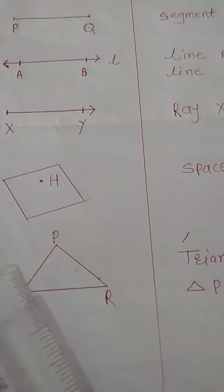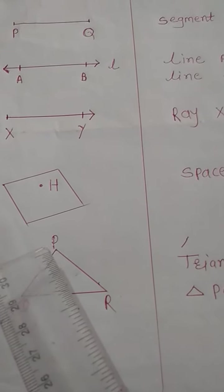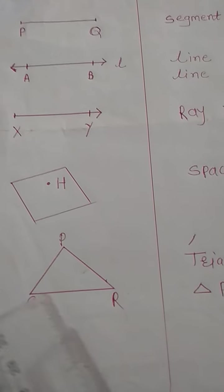Triangle has three angles and is read using one letter or three letters. For example, angle P, angle Q, angle R.